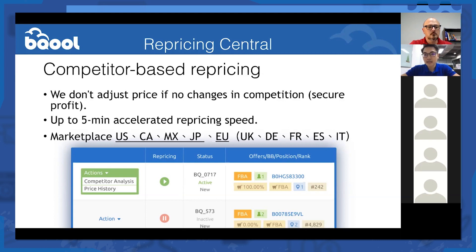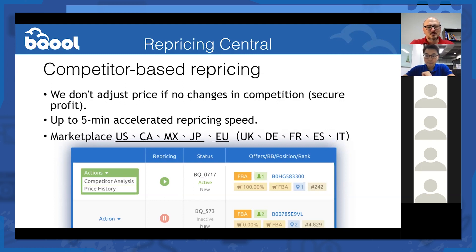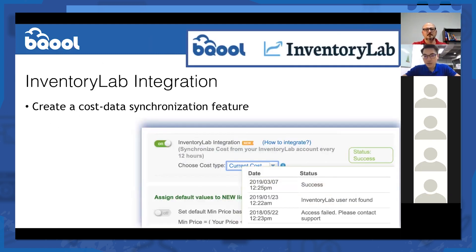From what we've been seeing, we do notice throttling has happened before. On our end, we adjust the submission frequency so we are still able to reprice your listing within five minutes and reflect the price change on Amazon. There is a specific situation for that, but Amazon didn't specify the actual limitation for the US marketplace.